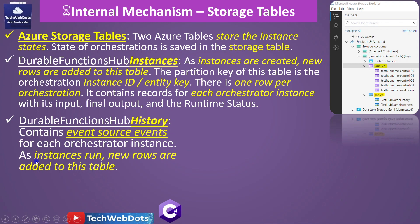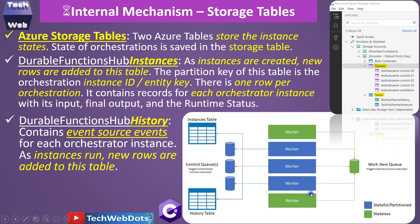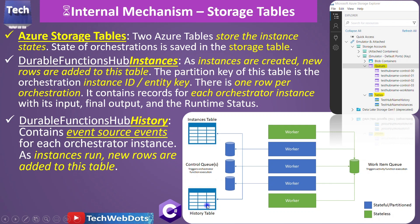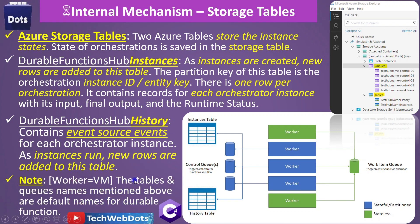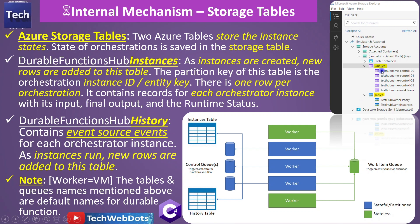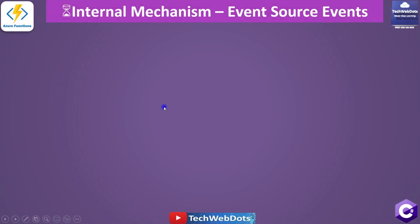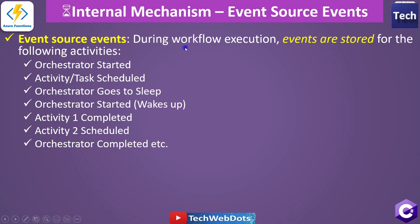As instances run, new rows are added to the history table. In the diagram, you can see three workers — think of them as three virtual machines — connected to the control queues, the history table, and the instance detail table. The control queue contains two types: work items and partition control queues. The table and queue names mentioned are the default names for durable functions, but you can change them — for example, the task hub name — which we'll discuss next.